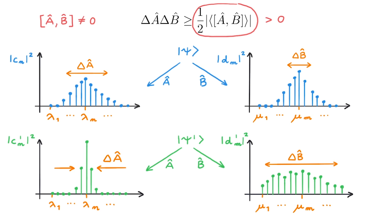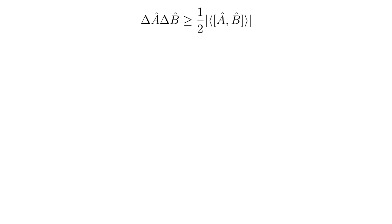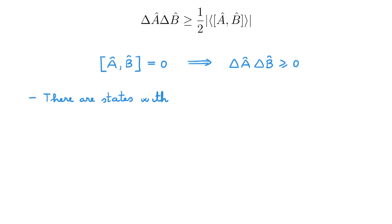So as claimed at the very beginning of the video, the uncertainty principle allows us to relate the C and the D expansion coefficients of a given state. The case when A and B commute is not so interesting. In this case, the Heisenberg uncertainty principle still holds, but all it says is that delta A times delta B must be larger than or equal to zero. So even if we make delta A very small, we're not forced to make delta B large, and in particular there are states with delta A and delta B arbitrarily small at the same time.